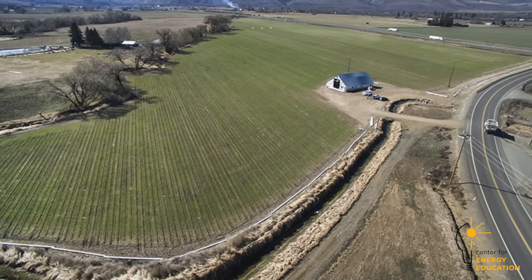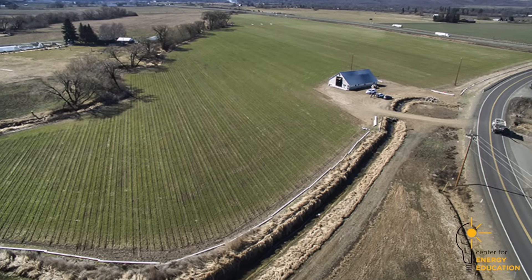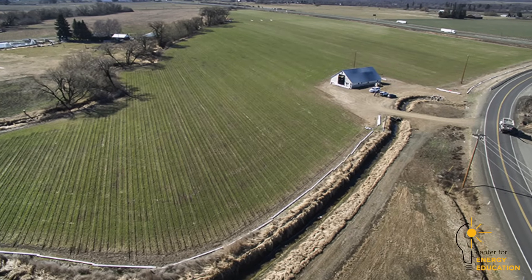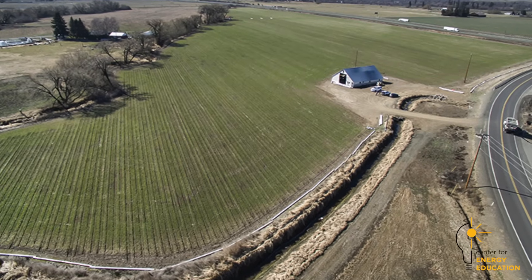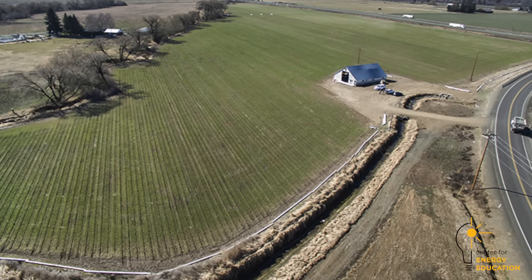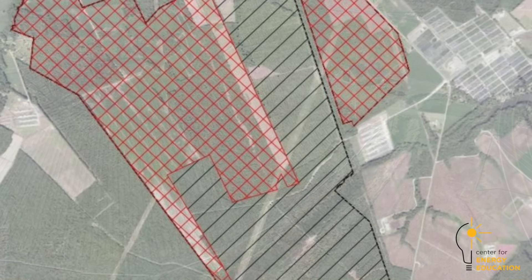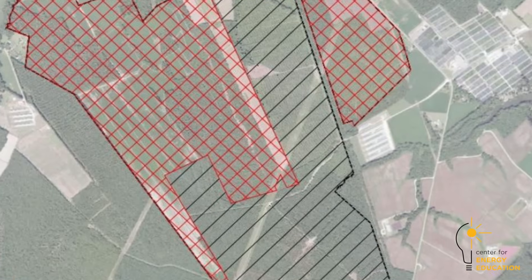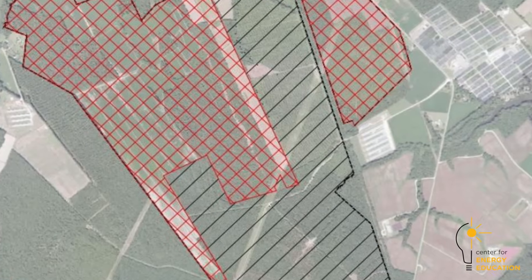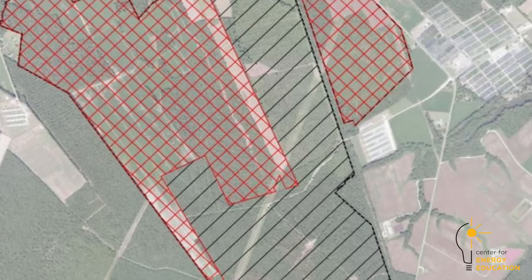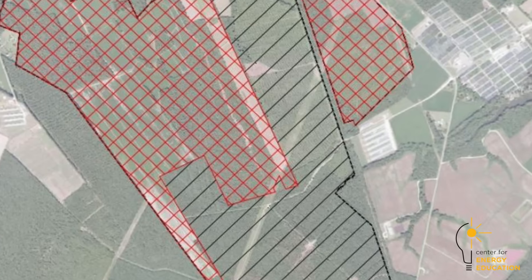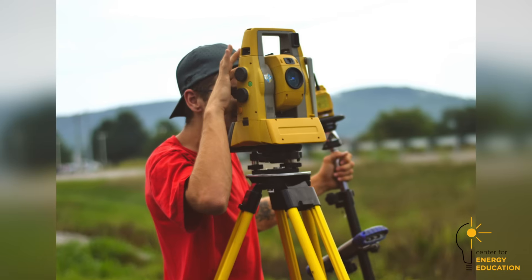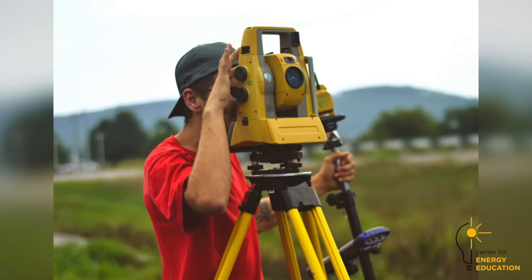The construction begins when the site is identified and the land is then signed up. Once we've identified all the land, the engineers will look at where the different setbacks within that land are and where they can place panels. The engineering really kicks off with the site survey.